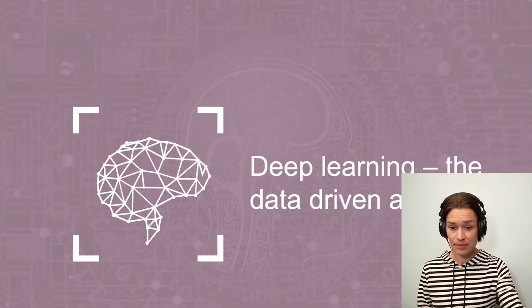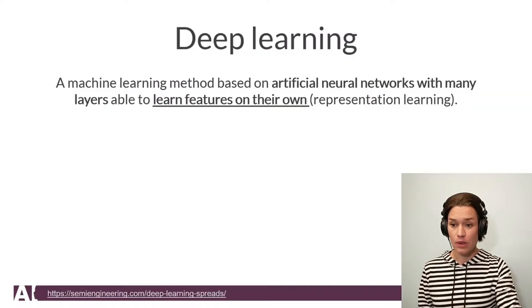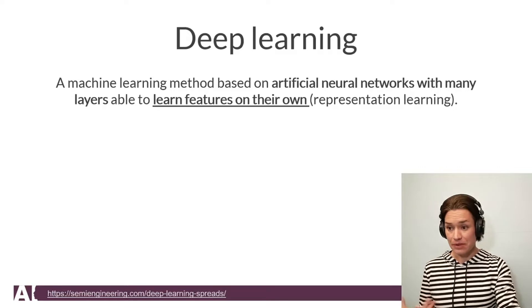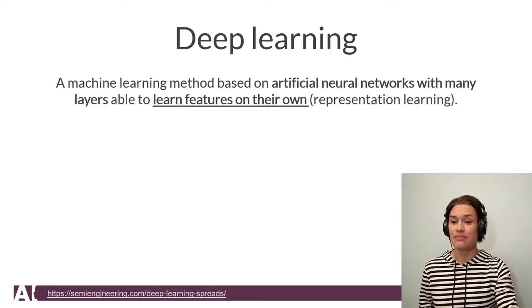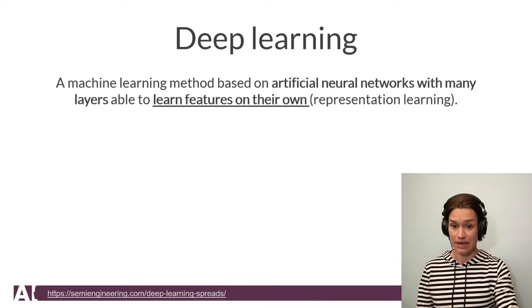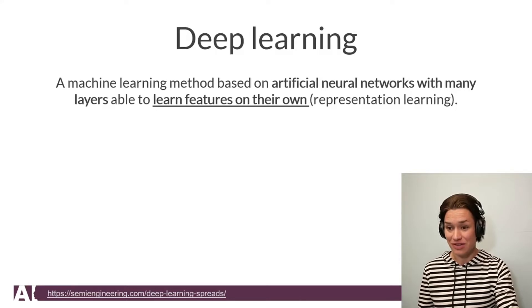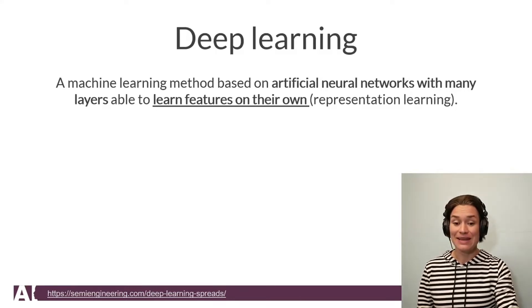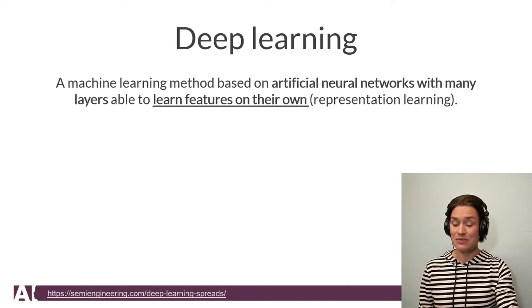So let's dive into what deep learning is and why is it a data-driven approach. Deep learning is a machine learning method that is based on artificial neural networks with many layers — many layers, that makes it deep. If we have few layers, that's not deep learning. And it learns the features on its own, and this is where the data-driven approach comes in.